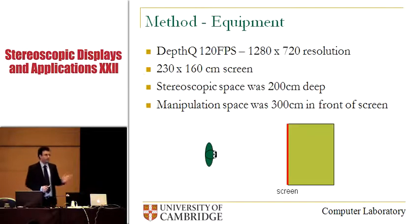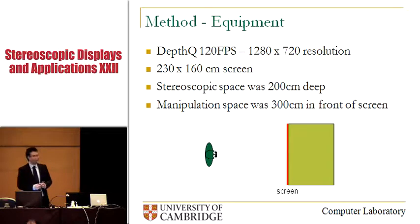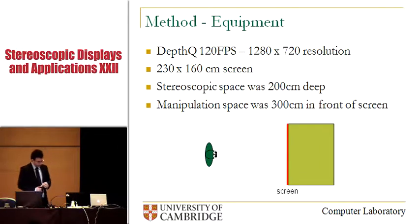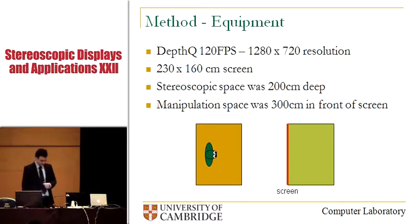Stereoscopic display was provided by a Depth-Q stereo projector. The screen was, as I already mentioned, very big — over 100 inches in diagonal. The stereoscopic space was about 200 centimeters deep, entirely behind the screen. You can see our screen here and the stereoscopic space behind the observer. Notice the relative size of the display and the observer. The manipulation space was the same physical size as the perceived volume behind the screen, and it was centered about 3 meters in front of the screen.